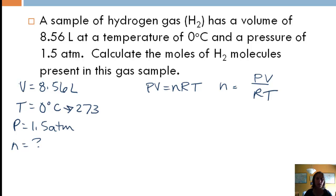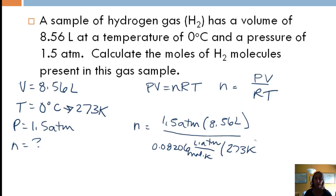The only thing I do need to convert is my temperature. I need to convert it to Kelvin. If I add 273, that gives me 273 Kelvin. Based on my R value of 0.08206 liter atmospheres per mole Kelvin, it looks like all of my units are okay, so I don't need to convert anything else. But if, for example, my pressure was in torr, I would need to convert that. So now let's plug in. We've got 1.5 atmospheres times my volume, which is 8.56 liters, divided by my R value, which is 0.08206 liter atmospheres per mole Kelvin, and then my temperature is 273 Kelvin.